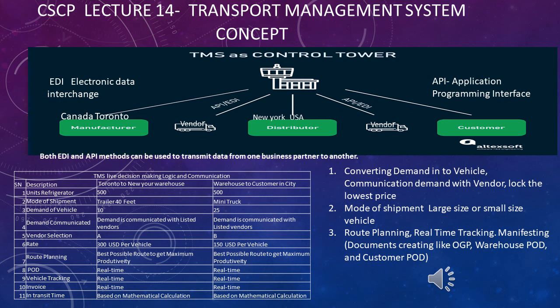When the stock arrives at the New York warehouse, the TMS converts the order into the number and type of vehicles needed for last-mile delivery — for example, mini trucks to deliver to customers in New York City. There may be 25 mini trucks required. All these decisions are made through artificial intelligence within the TMS software.